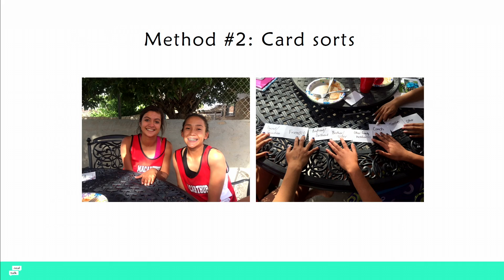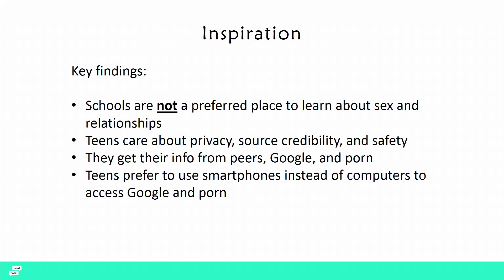After speaking to about 60 people in this first round, we learned that schools are not the preferred place to learn about sex and relationships. Teens do care about privacy, source credibility, and safety. Currently, they get their info from peers, Google, and porn. And teens prefer to use their smartphones instead of computers to access that information.